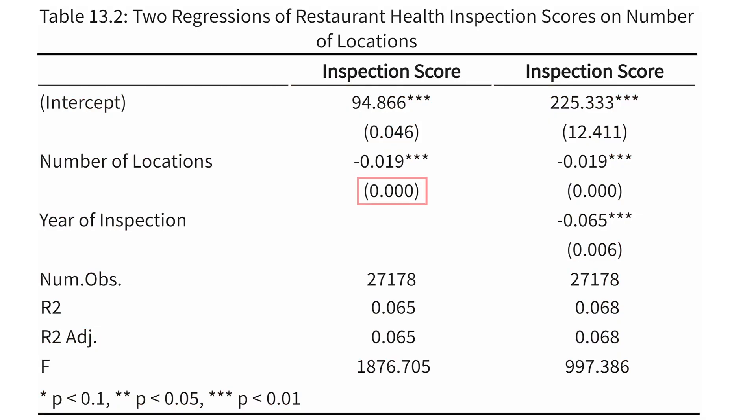We can see that the standard error on our coefficient — the standard error of beta one hat — is very, very small. Here it actually says 0, 0, 0. It can't actually be zero, so if it just says zero, that typically just means it's so small that it's below the smallest value I'm willing to show. So that's what we have for our coefficient and our standard error.